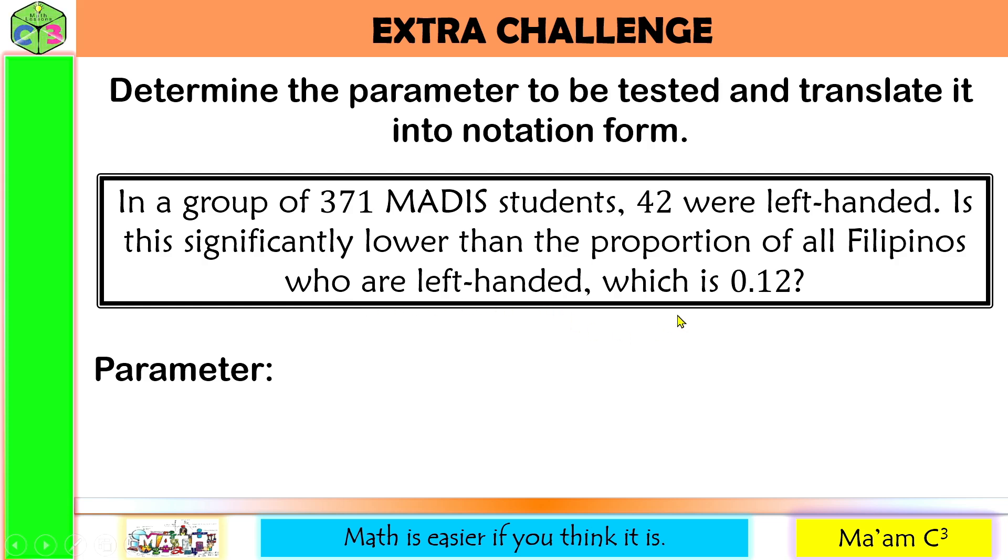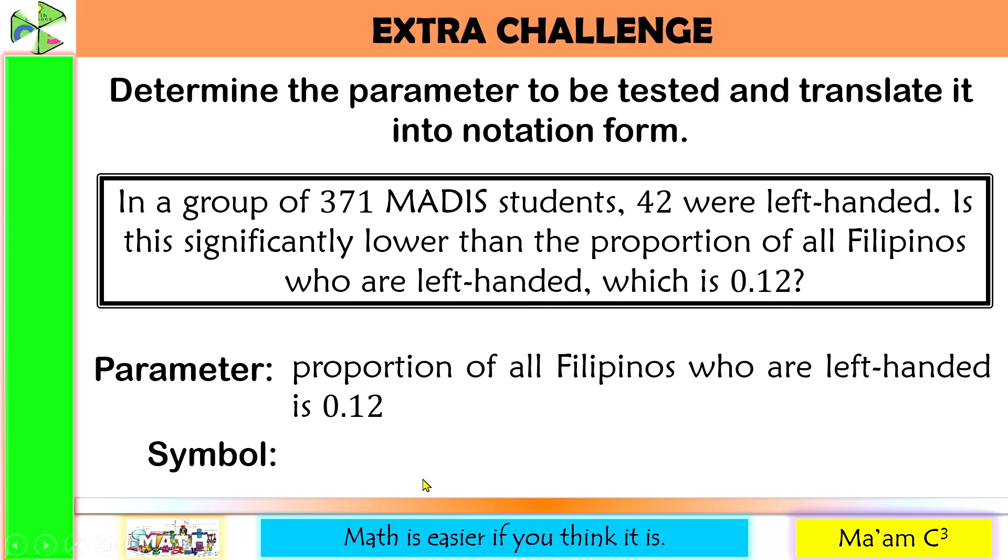That will be our parameter. And it is equal to 0.12. In symbol, since we have here proportion, this will be P is equal to 0.12.